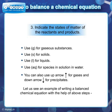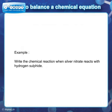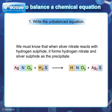Let us see an example of writing a balanced chemical equation with the help of these steps. Write the chemical reaction when silver nitrate reacts with hydrogen sulfide. We must know that when silver nitrate reacts with hydrogen sulfide, it forms hydrogen nitrate and silver sulfide as the precipitate.